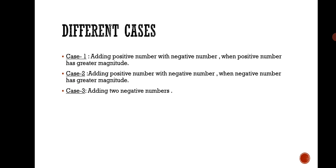Now let me discuss the different cases in the two's complement method. We have three cases: the first is when we add a positive number with a negative number where the positive number has greater magnitude; the second is a positive number with a negative number where the negative number has greater magnitude; and the last case is when we have two negative numbers. Let us discuss each case with examples in detail.